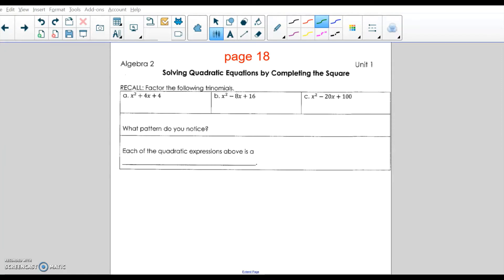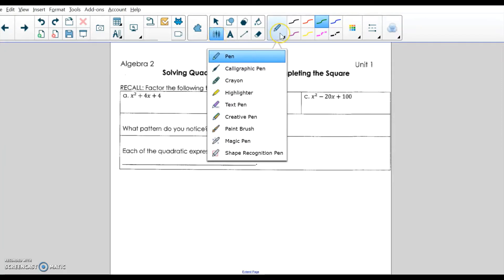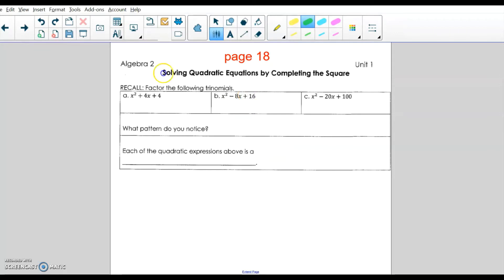Okay, so this is the completion of square technique for solving quadratics. Now in this first little section on page 18, it's a recall section, and so they're asking us to recall how to factor these trinomials that have these special numbers at the back end.